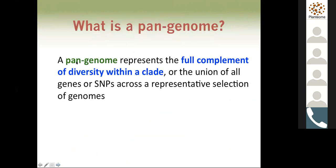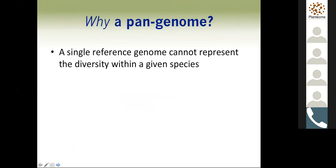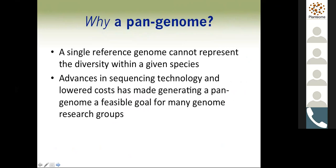So what is a pan genome? A pan genome represents the full complement of diversity within a clade, or the union of all genes or SNPs across a representative selection of genomes. Why would people want to make a pan genome? It turns out a single reference genome doesn't really represent the diversity within a given species. Also, advances in sequencing technology and lower costs have made generating a pan genome a feasible goal for many research groups.